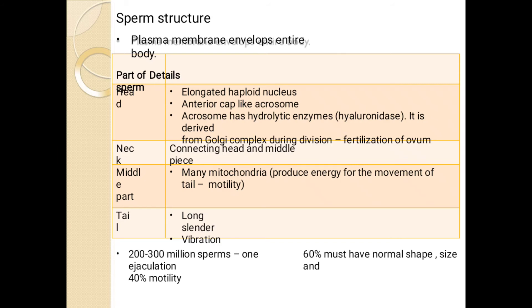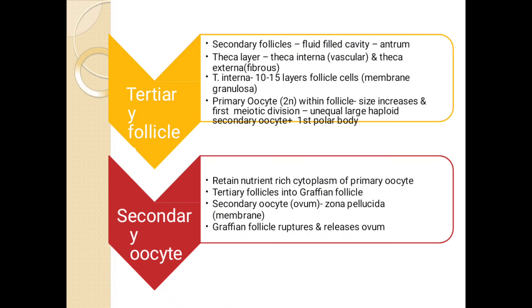The next is oogenesis. Oogenesis is the formation of ovum from the oogonium cell — it takes place in the ovary and it begins at the stage of embryonic development. From gamete mother cells, at birth, millions of fetal ovaries are formed. From gamete mother cells, primary oocytes are formed; meiotic division of primary oocytes forms primary follicles, from primary follicle secondary follicle, from secondary tertiary follicle, and from tertiary, secondary oocyte is formed.